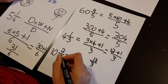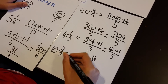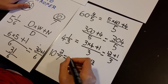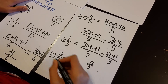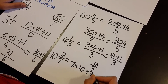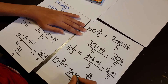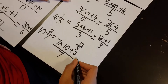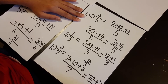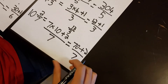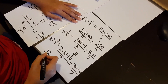Coming back to the next problem: 10 and 2 over 7. Multiply the denominator by the whole number — 7 times 10 — and add the numerator, with the denominator remaining the same. So 7 times 10 plus 2 divided by 7: 7 times 10 is 70, plus 2 divided by 7, giving you 72 over 7.